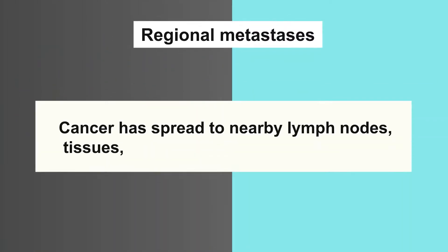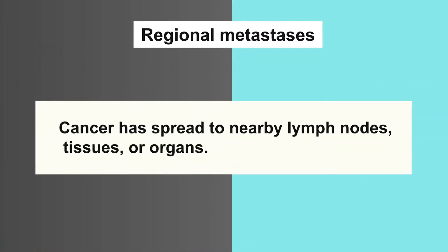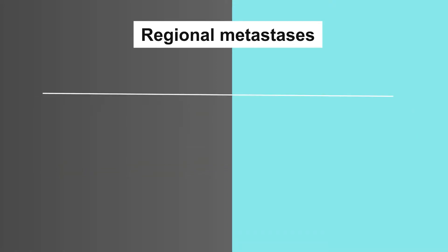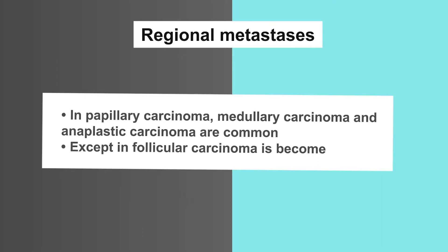Feature number nine is regional metastases, which means cancer has spread to nearby lymph nodes, tissues, or organs. In papillary carcinoma, medullary carcinoma, and anaplastic carcinoma, regional metastases are common. In follicular carcinoma, regional metastases are rare.